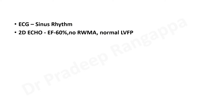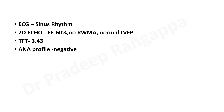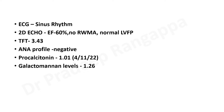ECG was normal. We did an echo because he was very hypoxemic, requiring high FiO2 — he was on NIV and intermittent HFNC requiring up to 60–70% oxygen. Echo showed normal filling pressures, ruling out a cardiac cause for pulmonary edema. Thyroid was normal. ANA was negative, ANA profile was negative. Procalcitonin was a bit high. Galactomannan levels were higher than the reference range, which we did because of the cavity to rule out Aspergillus — that will be discussed in another video.